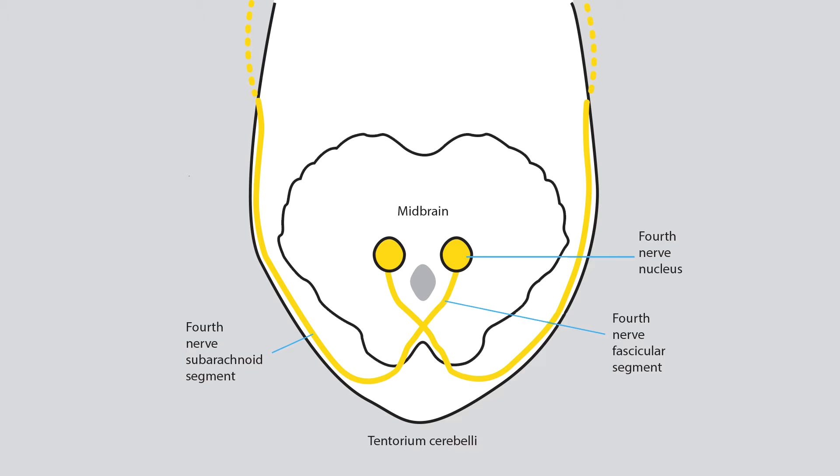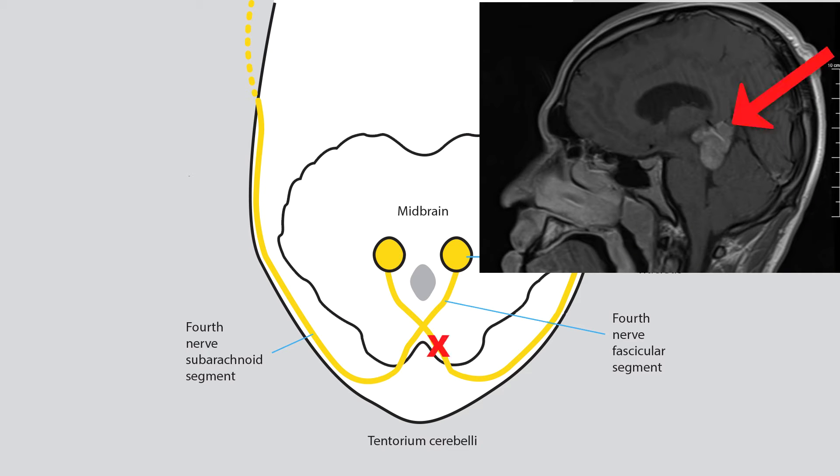Now let us track damage to the fourth nerve according to anatomic location. Lesions of the fourth nerve nucleus are so rare that you can almost forget about them. The fourth nerve fascicles can be hurt by lesions of the dorsal midbrain, expanding lesions of the thalamus, including infarcts and hemorrhages, and tumors of the pineal gland.